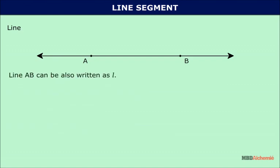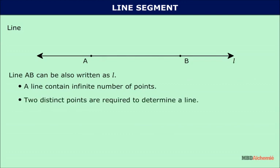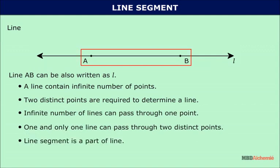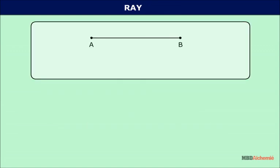We also use an English small letter to denote a line. Line AB can also be written as line l. A line contains an infinite number of points. Two distinct points are required to determine a line. An infinite number of lines can pass through one point, but one and only one line can pass through two distinct points. A line segment is a part of a line.